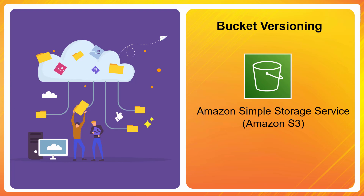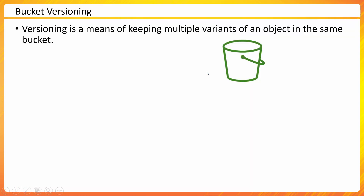Let's talk about another feature of Amazon S3 called bucket versioning. This feature can be very useful if you want to retain multiple copies of an object, and every copy would be treated as a new version. Bucket versioning is a feature enabled at the bucket level. It allows you to keep multiple variants of an object in the same bucket, with no limit on how many versions you want to keep.